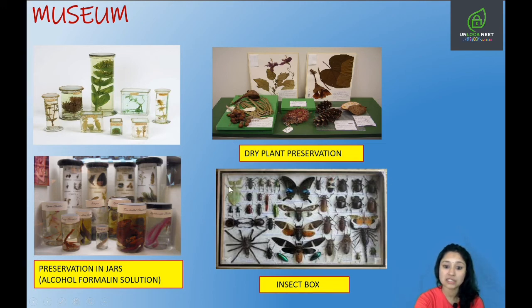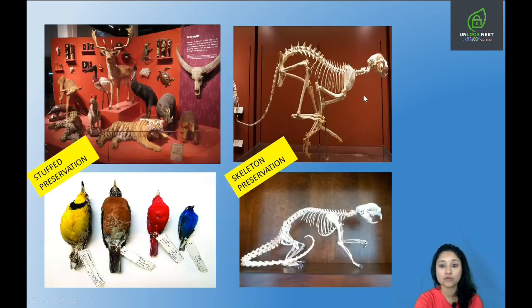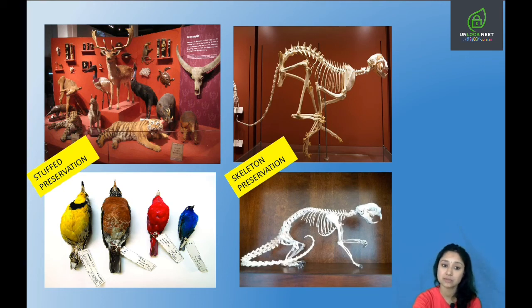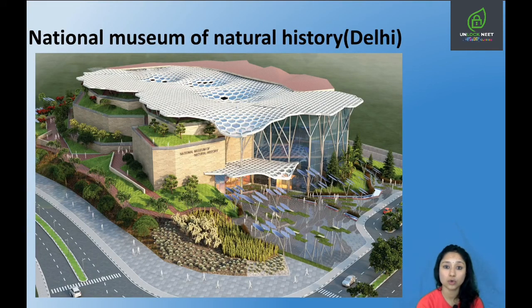Insects can be preserved by first killing them, then drying them, and then pinning them in an insect box. Preservation of animals can also be done in the form of skeletons. Large animals can be stuffed — using cotton or coir stuffing — to make identification of organisms easy. The National Museum of Natural History in Delhi is considered to be a well-known museum in India.